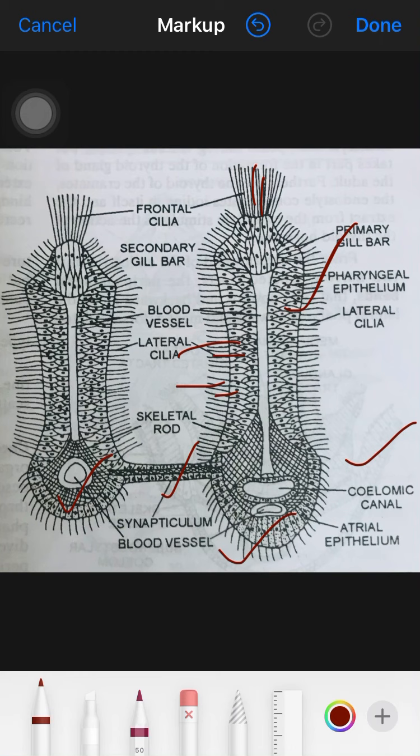Both types of gill bars are lined with ciliated epithelium on all sides, though ciliation is not uniform.